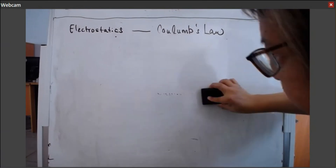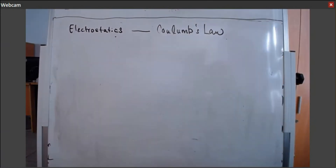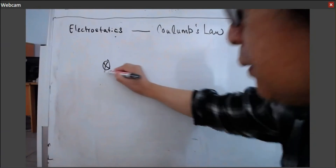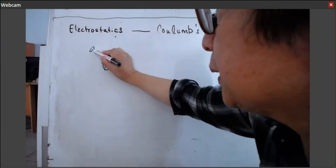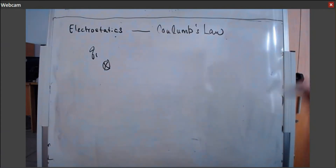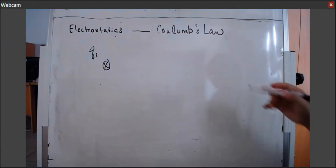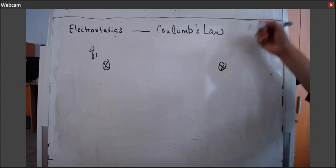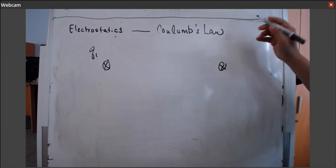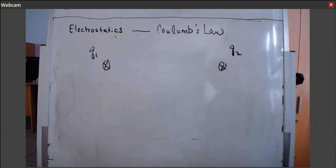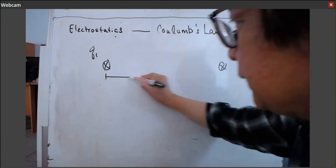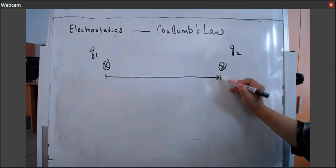Coulomb's Law. Suppose we have two objects. They are charged. The object on the left carries charge Q1, and the object on the right is a carrier of another charge Q2. The distance between them is D.